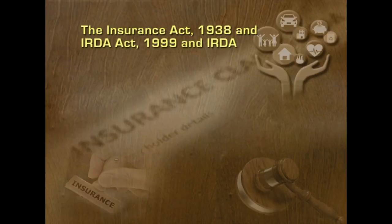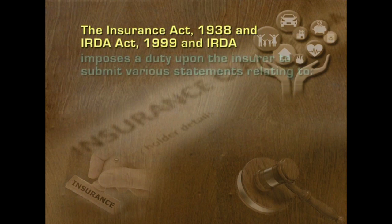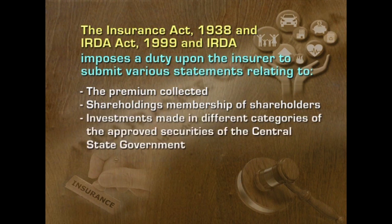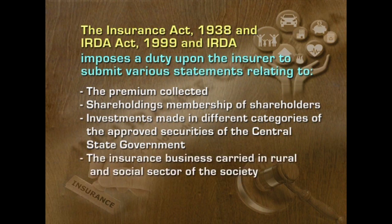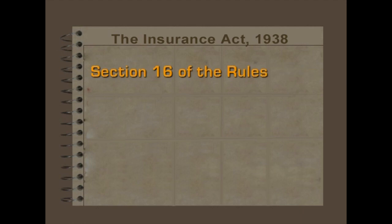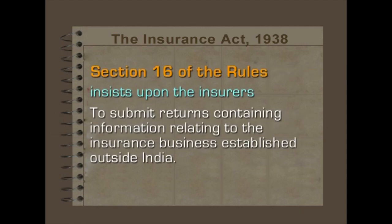The Insurance Act 1938, IRD Act 1999 and the IRDA impose a duty upon the insurer to submit various statements relating to the premium collected, shareholding membership of shareholders, investments made in different categories of approved securities of the central and state government, and the insurance business carried in the rural and social sector of the society as included in Section 32 of the Act. All these statements are required to monitor the business of insurance in India and correct the defects of the insurance business. The rules of the Insurance Act 1938 also prescribe many formats for reporting to the concerned authorities. Section 16 of the rules insists upon insurers to submit returns containing information relating to the insurance business established outside India.